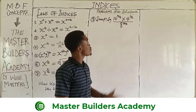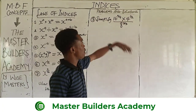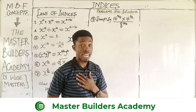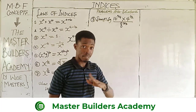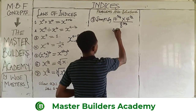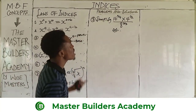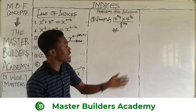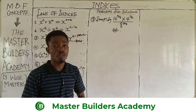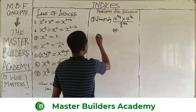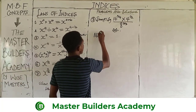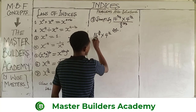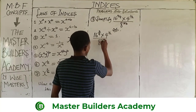The problem is: 16 raised to power 3 over 4, multiplied by 4 raised to power 1 over 2, all over 8 raised to power 5 over 3. This is very interesting. All we need to do is hold down our solution and identify the laws that are applicable here. There are so many ways you can solve this problem — I'll show you how.